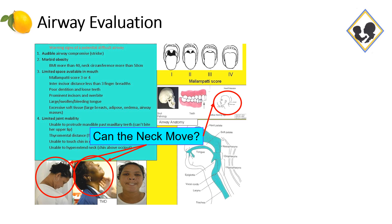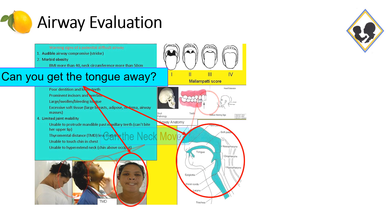Also during this test, you can evaluate the thyromental distance, which should be at least six centimeters. Finally, evaluate if you will be able to depress the tongue during laryngoscopy — there needs to be adequate space in the lower jaw to depress the tongue into. You can ask the patient to protrude her lower jaw above the upper jaw, which will give you an indication of adequate lower jaw space.